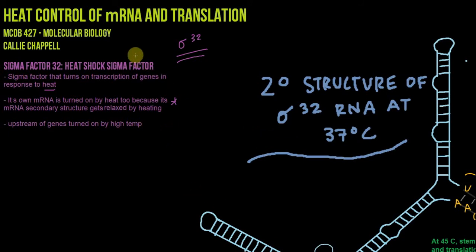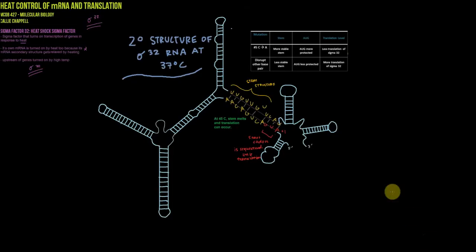I always remember this because the normal sigma factor is sigma 70, called the housekeeping sigma factor. So I always remember my 70-year-old grandma is doing housekeeping, and then the sigma 32 is the heat shock one because it's still young and trendy and can respond to heat pretty well.